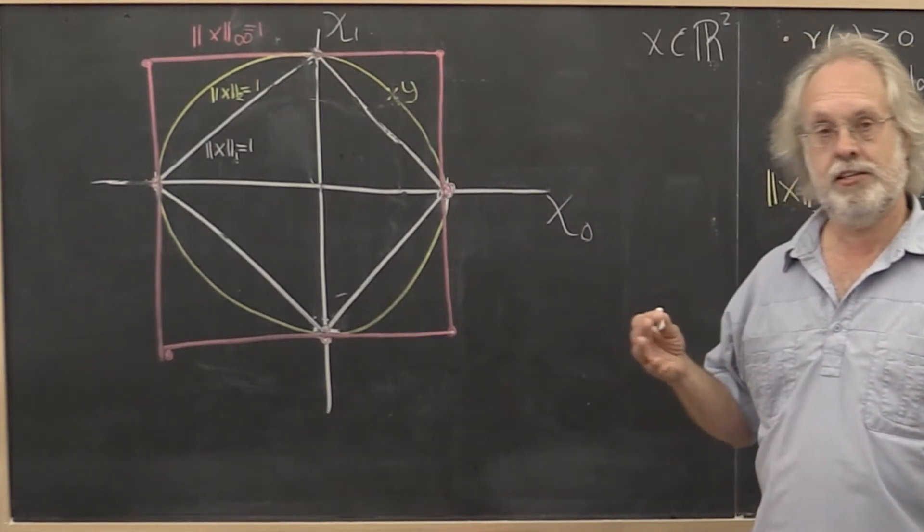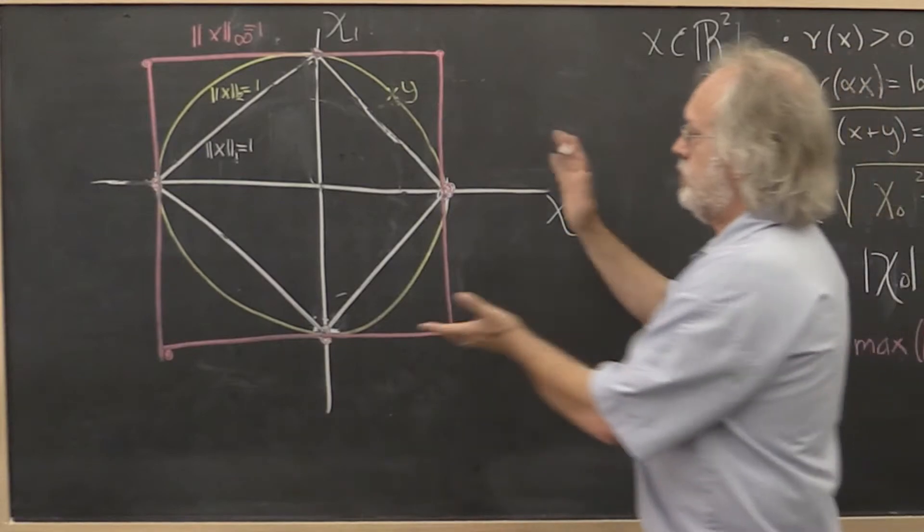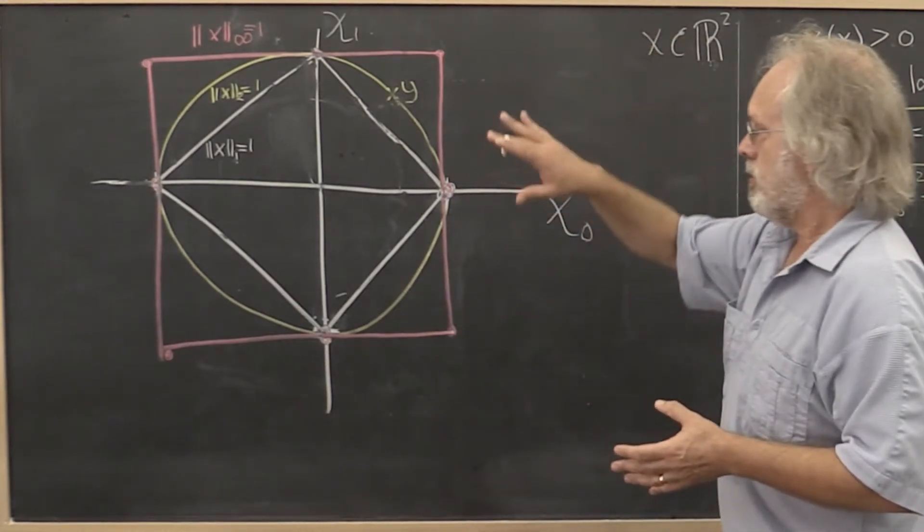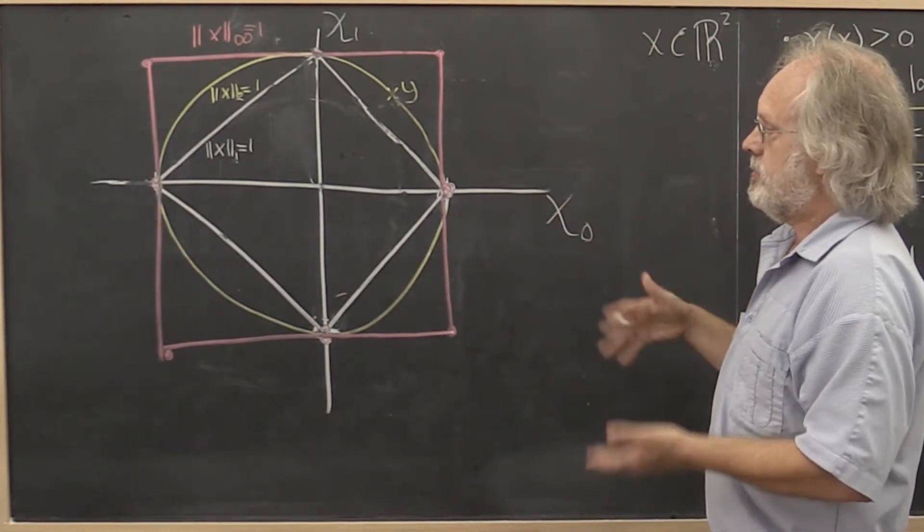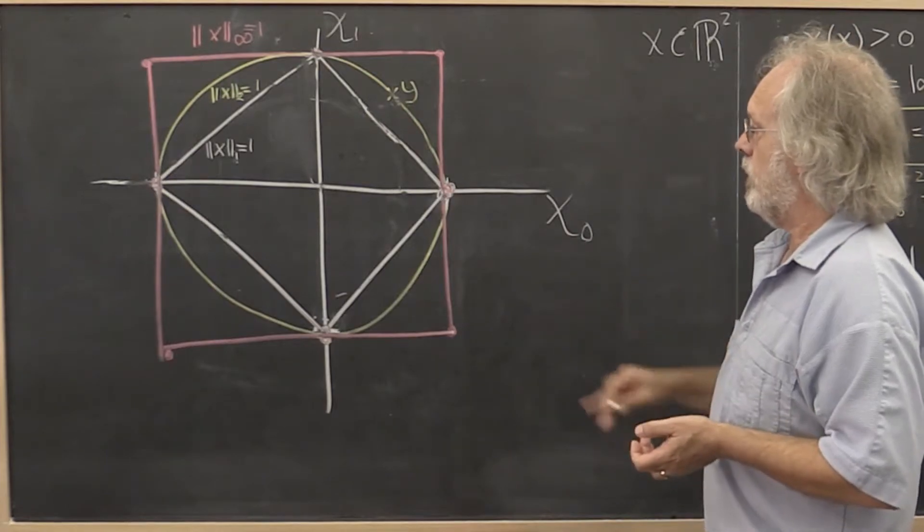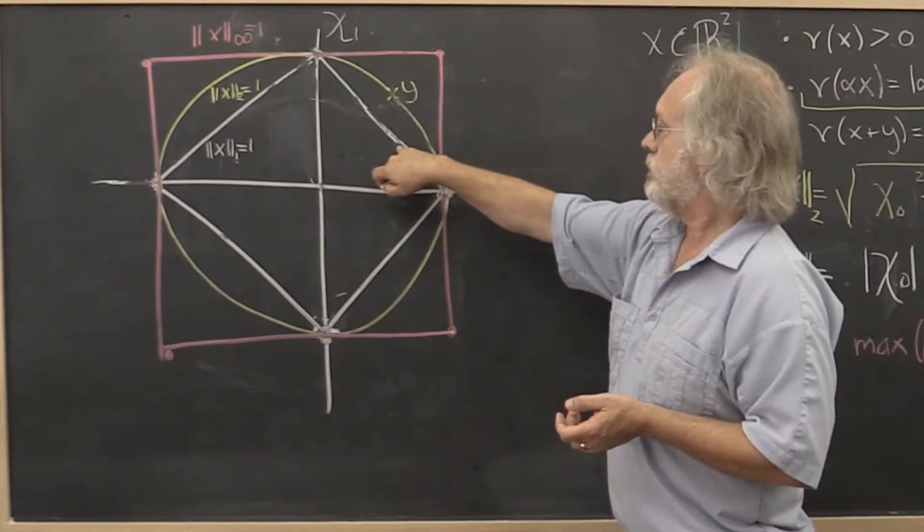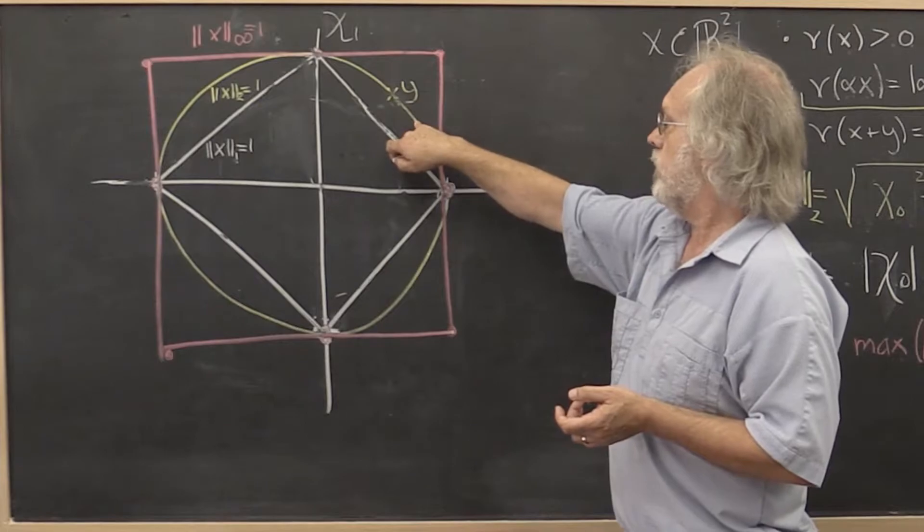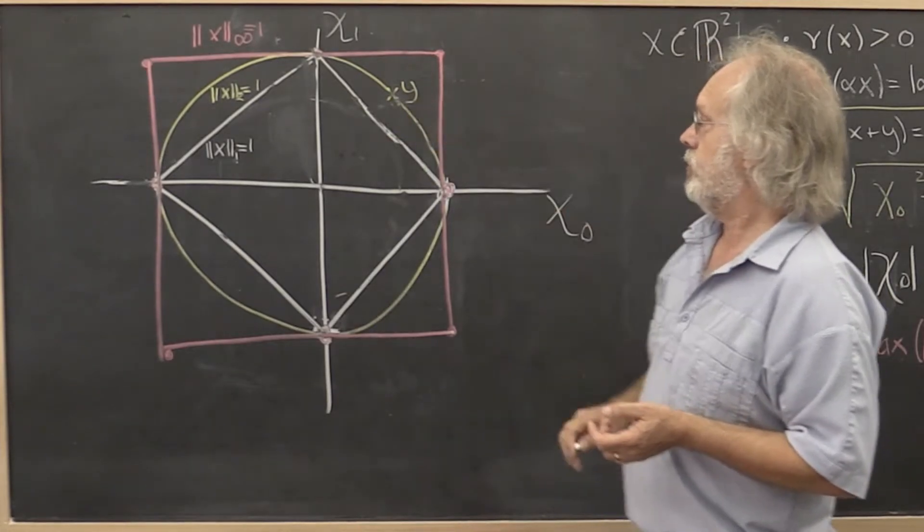So to motivate this, let's go back to this picture that we drew of the sets where the various norms are equal to 1: the 1 norm is equal to 1, the 2 norm is equal to 1, and the infinity norm is equal to 1.